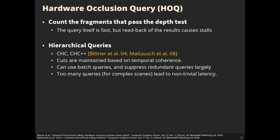Hardware Occlusion Culling counts the fragments that pass the depth test. The query itself is fast, but it causes stalls due to read-back of the results. Techniques such as CHC and CHC++ use a coherent hierarchical culling approach where cuts of the hierarchy are maintained based on temporal coherence. With hierarchy, they can use batch queries and suppress redundant queries largely, but too many queries lead to non-trivial latency.